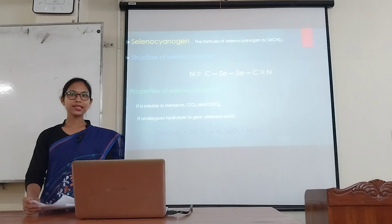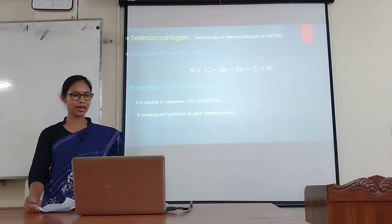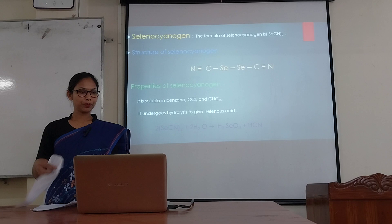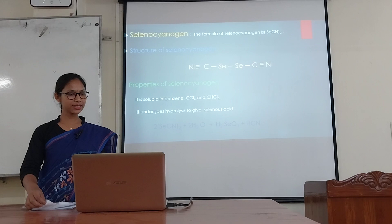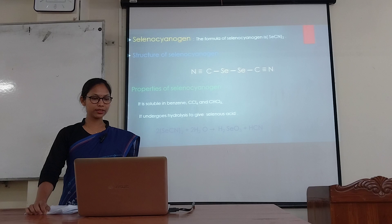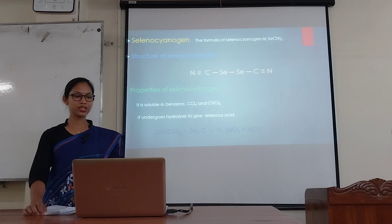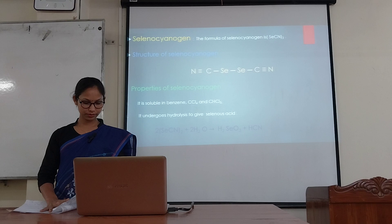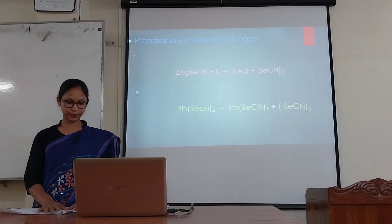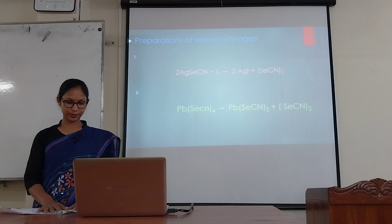Selenocyanogen. The formula of selenocyanogen is SeCN₂. It is a compound of selenium and cyanogen. Structure of selenocyanogen: it is soluble in benzene, carbon tetrachloride, and chloroform. It undergoes hydrolysis to give selenocyanic acid. Preparation of selenocyanogen: when silver selenocyanate is heated with iodine solution, it gives selenocyanogen.